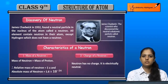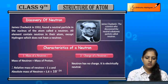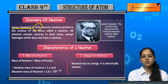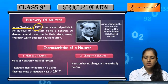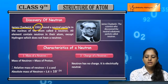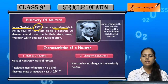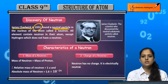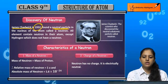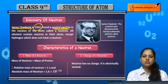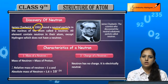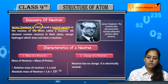The next topic is the discovery of the neutron. James Chadwick in 1932 discovered the neutron, which is a neutral particle. The proton is a positively charged particle and the electron is a negatively charged particle, but the neutron is a neutral particle.